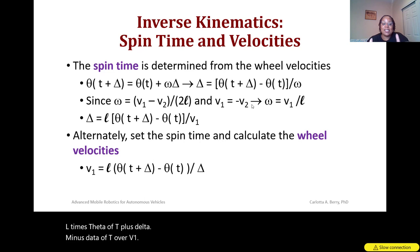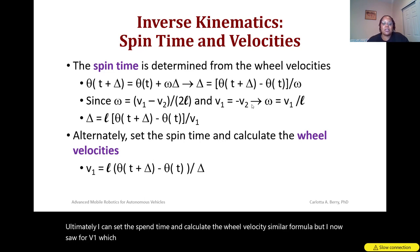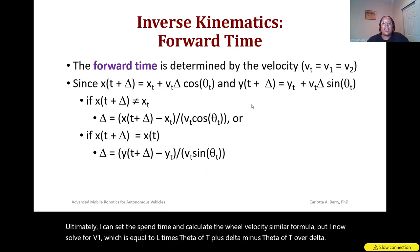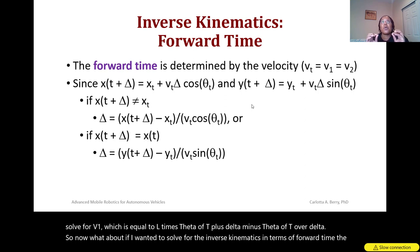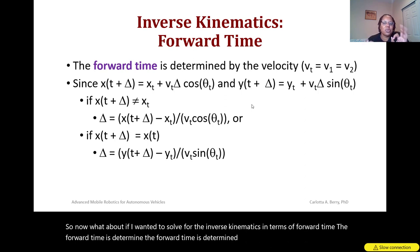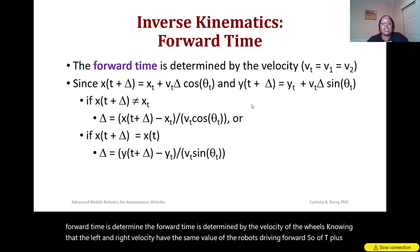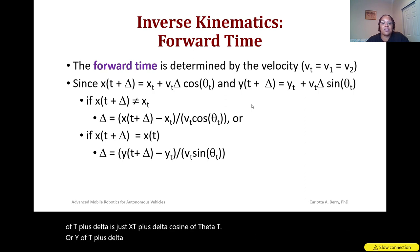Alternatively, you can set the spin time and calculate the wheel velocity using a similar formula, solving for v1, which equals l times the angle difference over delta. For forward time, the forward time is determined by wheel velocity, knowing that left and right velocities have the same value when driving forward. So x(t+delta) equals x(t) plus vt times delta times cosine(theta t), and y(t+delta) equals y(t) plus vt times delta times sine(theta t).